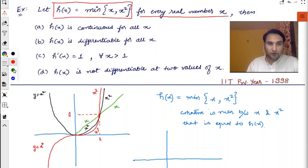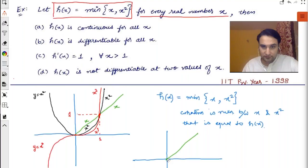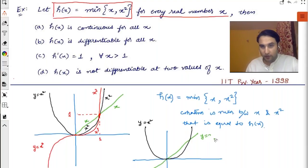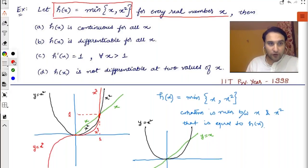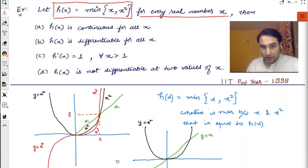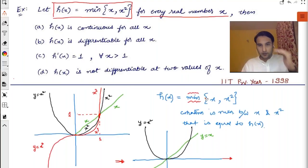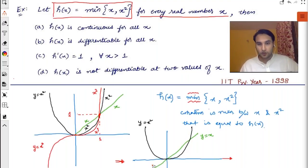We plot y = x (the green graph) and y = x² (the black graph). Now listen very carefully. I am moving from left to right, and I will always look at which of the two graphs is lower — the one which is below is the minimum.